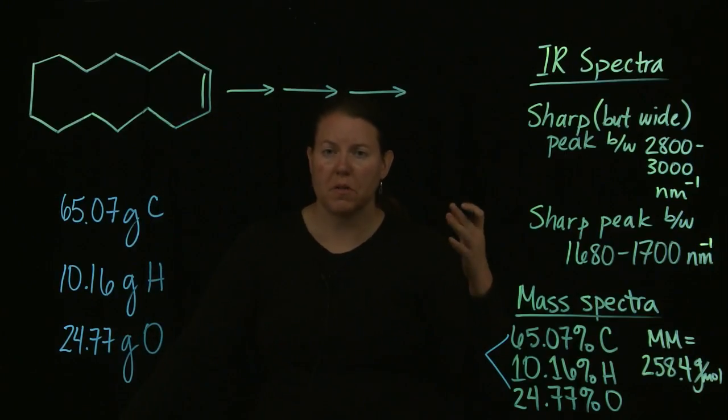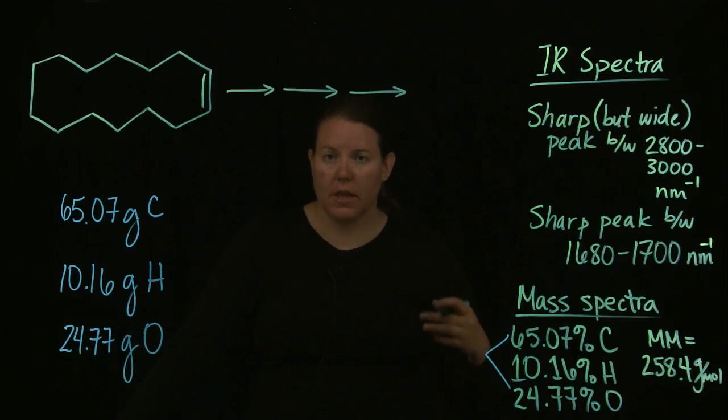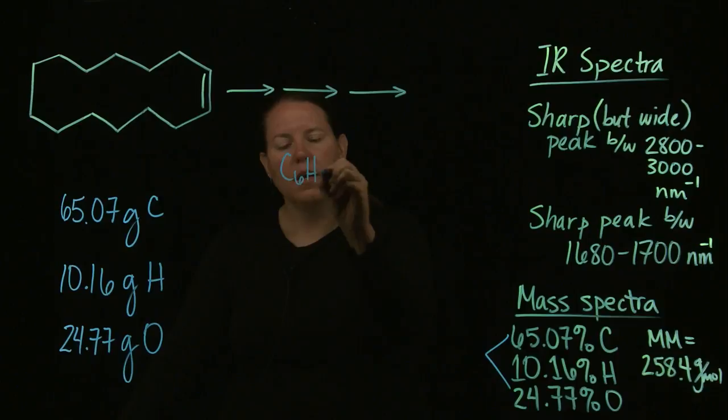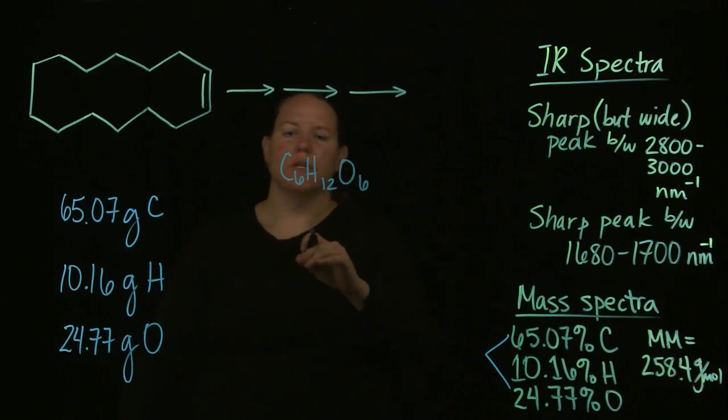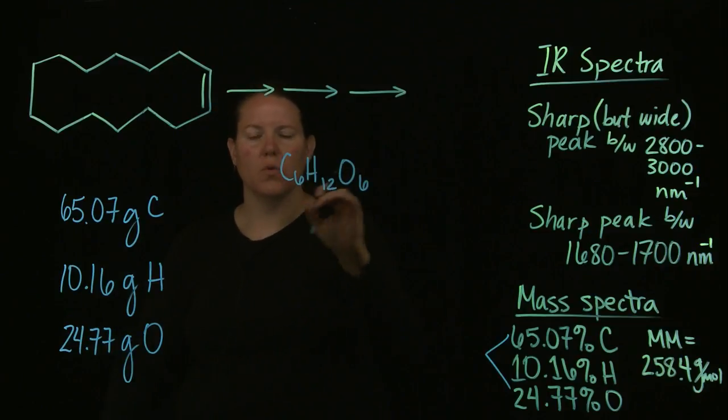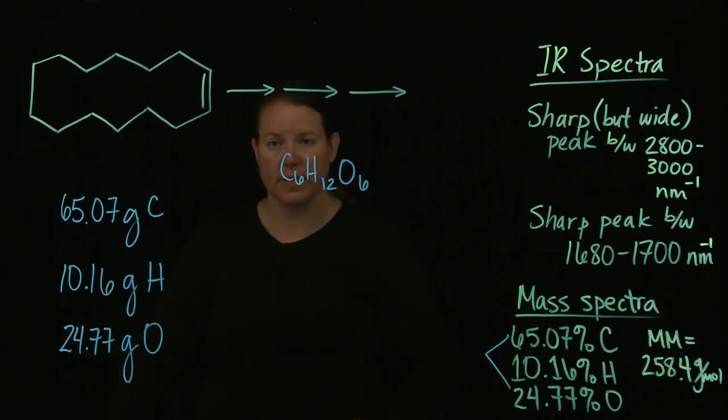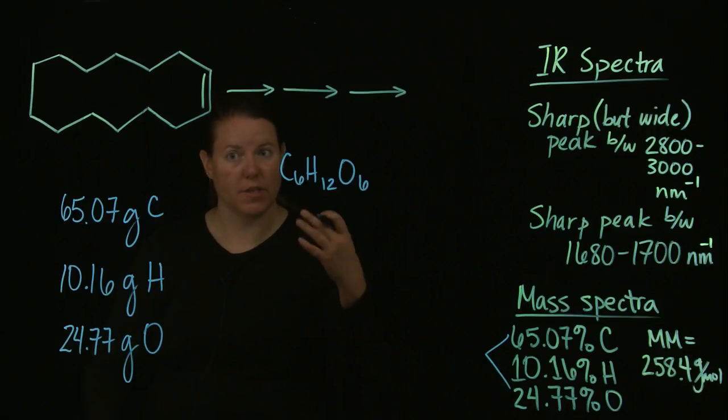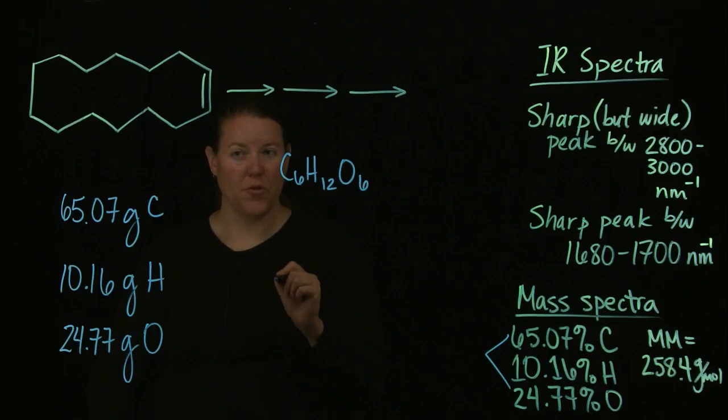What essentially I'm going to do here is I'm just going to relabel these percents as grams. The assumption is that you have 100 grams of this stuff. If you have 100 grams of this compound, 65.07 grams of those would be carbon. 10.16 grams of those would be hydrogen. And then the last would be oxygen.